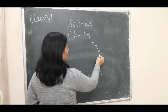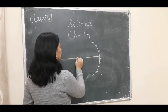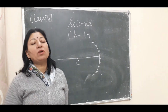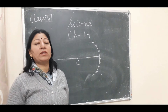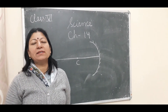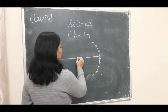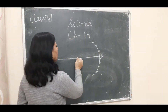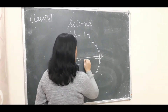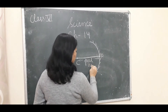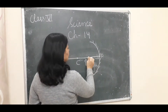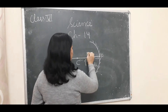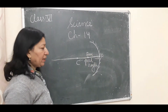The center point of the sphere is called the center of curvature. The point on the mirror where the principal axis meets is called the pole. The point where parallel rays converge after reflection is called the focus.